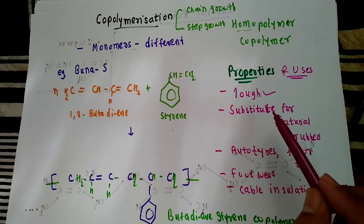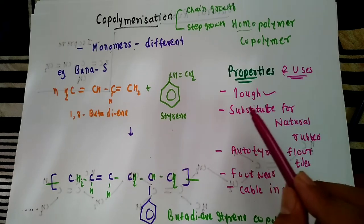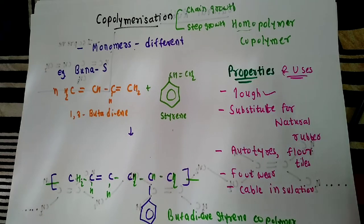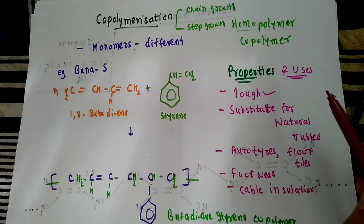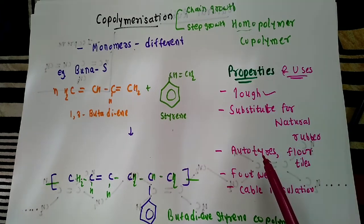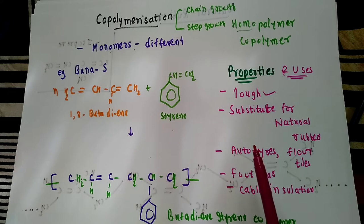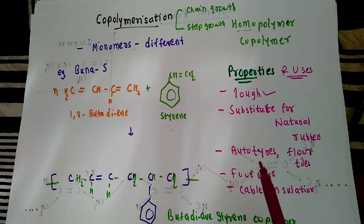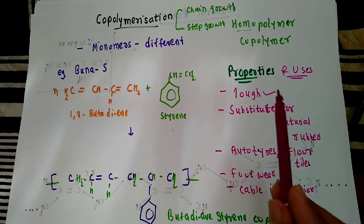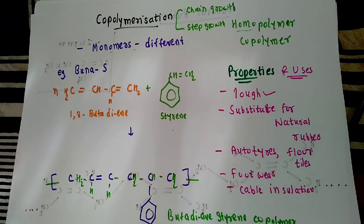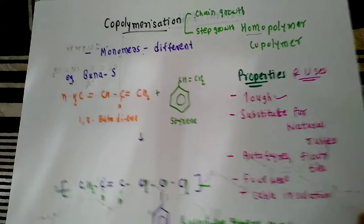Because they are tough, co-polymers can be used instead of natural rubber. Their uses include: preparation of auto tires, preparation of floor tiles, preparation of footwear, and manufacture of cable insulation. These are the properties and uses of co-polymers.